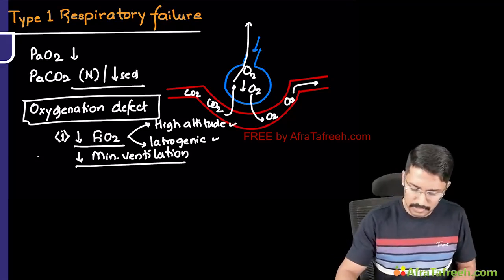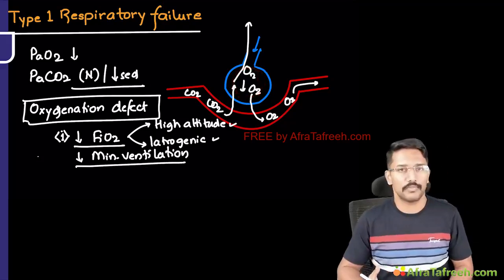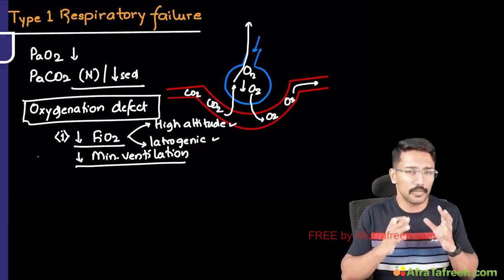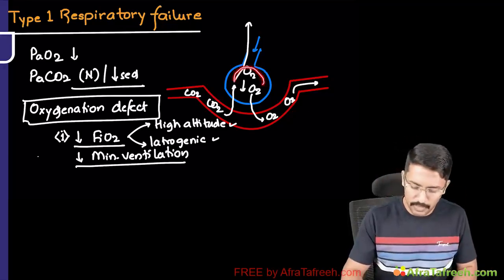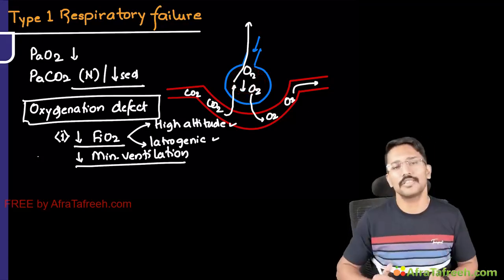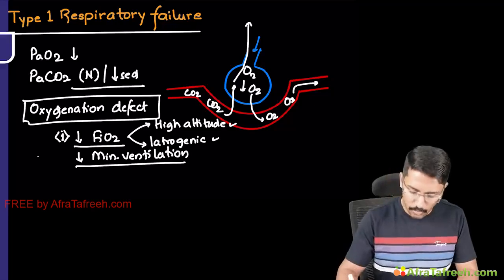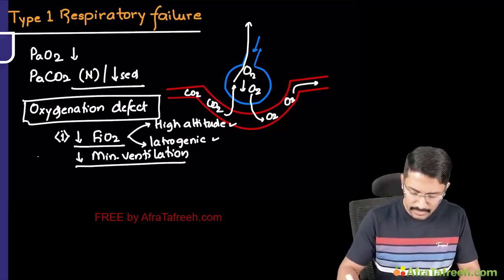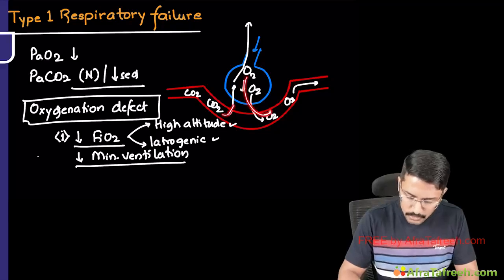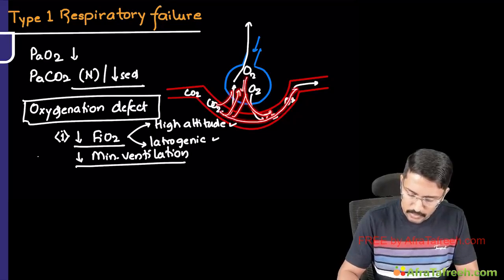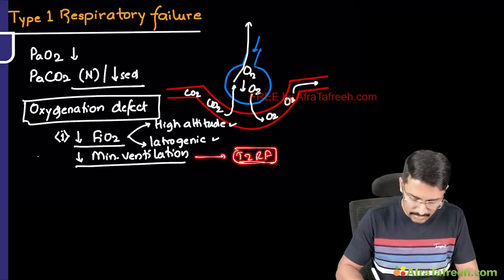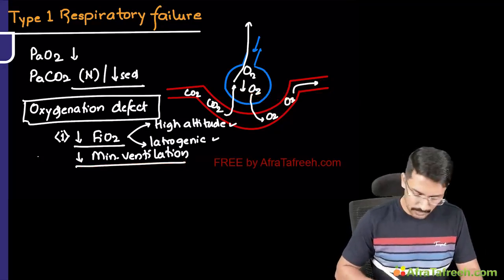The first scenario causing oxygenation defect is decreased FiO2 or decreased minute ventilation. Decreased FiO2 can occur at high altitude where the percentage of oxygen in the air is low, or iatrogenically in a patient on ventilator or under general anesthesia. Decreased minute ventilation occurs when respiratory muscles fail and less air reaches the alveoli. These patients eventually become type 2 because total ventilation is reduced — carbon dioxide also cannot be cleared. But initially they may present as type 1.